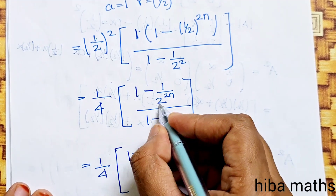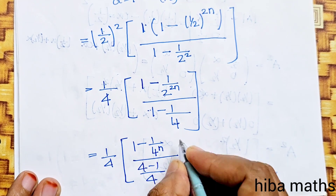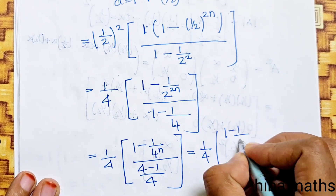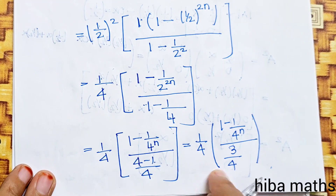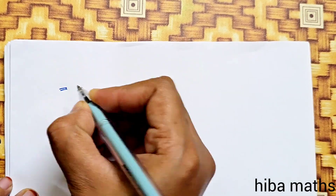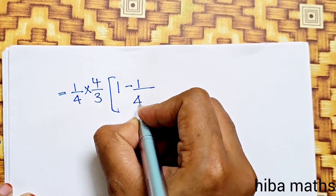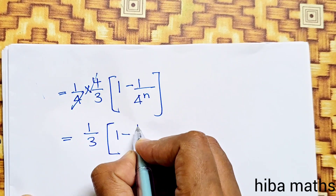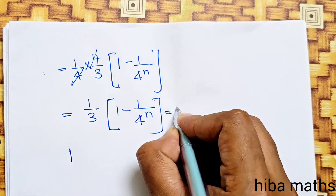Simplifying: (1 - (1/4)^n) ÷ (3/4) = (1/4) × (1 - (1/4)^n) × (4/3). The 4s cancel in numerator and denominator, giving (1/3)·(1 - (1/4)^n). This proves that the summation of det(A^k) from k=1 to n equals (1/3)(1 - (1/4)^n).